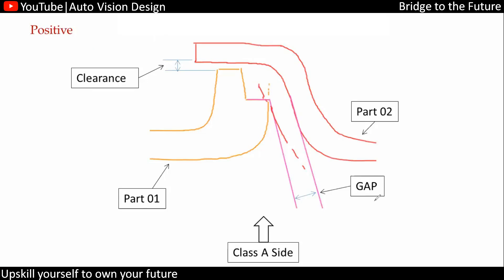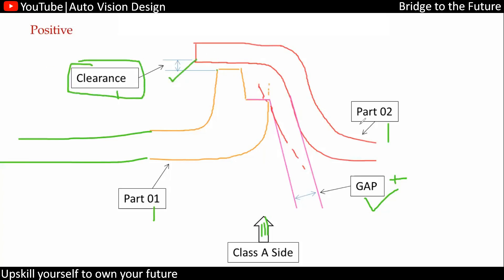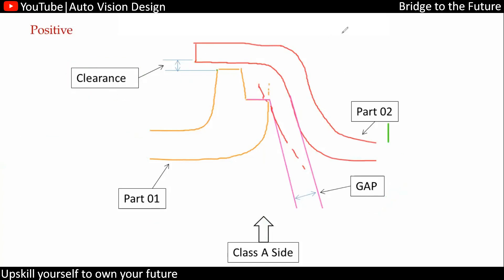The gap is positive in the condition we discussed. For part one and part two, whatever distance we have from the Class A side is called the gap. Whatever distance exists on the opposite side or not visible from Class A is called the clearance. So gap is the distance between two adjacent parts measured from the Class A side, while clearance is also a distance between adjacent parts but not visible from the Class A side.